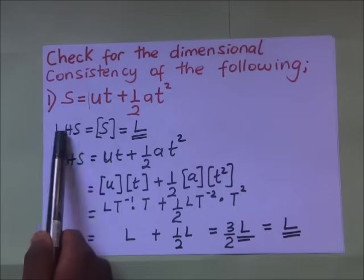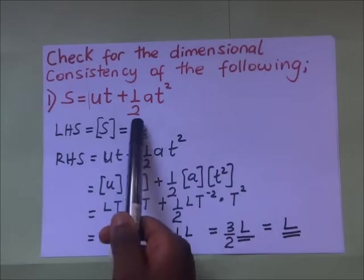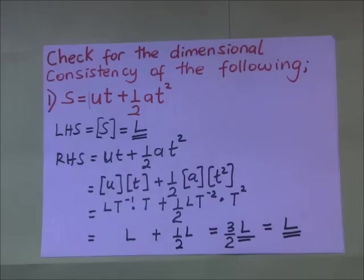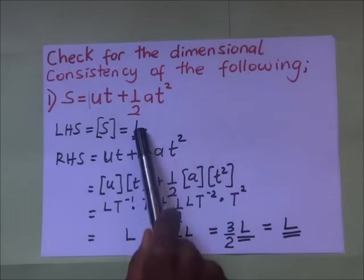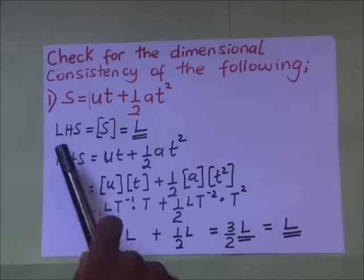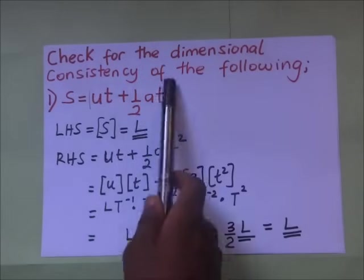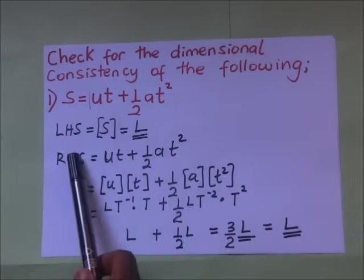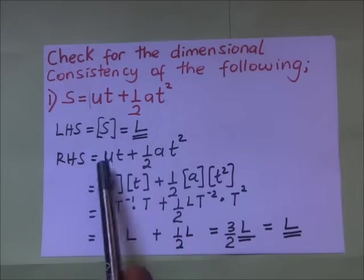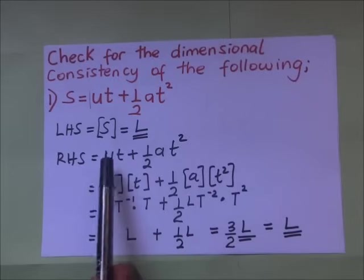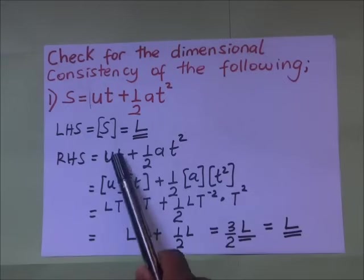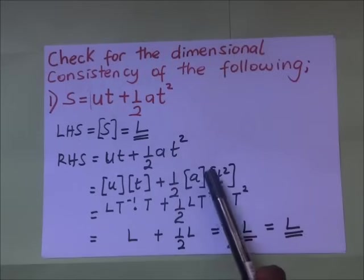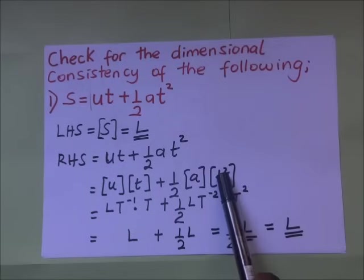On the left-hand side we have s, which is distance. As far as the three basic quantities are concerned, distance is L. Then we look at the right-hand side, which is ut plus ½at². Our duty is to find the dimensions on the right-hand side to see if they coincide with L. So we find the dimensions of u times the dimensions of t, plus ½ times the dimensions of acceleration times the dimensions of t squared.